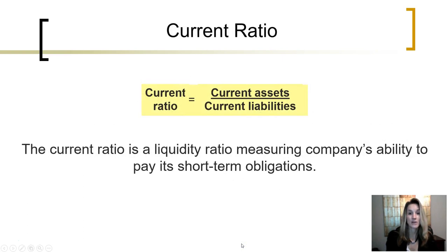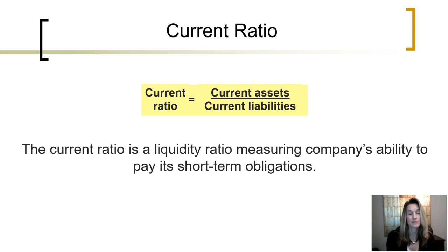The current ratio is calculated by taking the company's current assets and dividing by its current liabilities, both of which can be found on a classified balance sheet. Recall that a classified balance sheet recategorizes the assets and the liabilities into categories of current and non-current, or current and long-term.